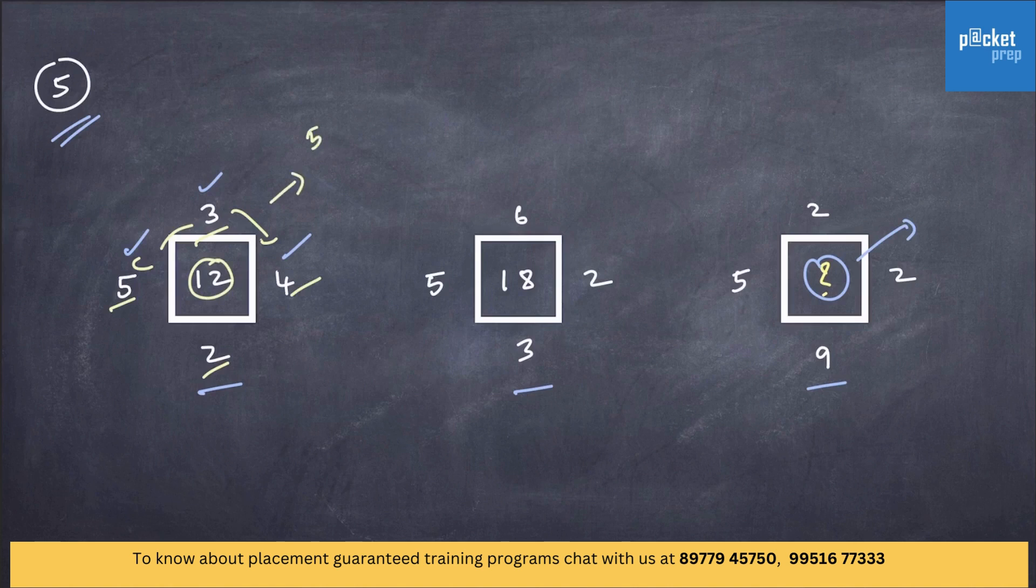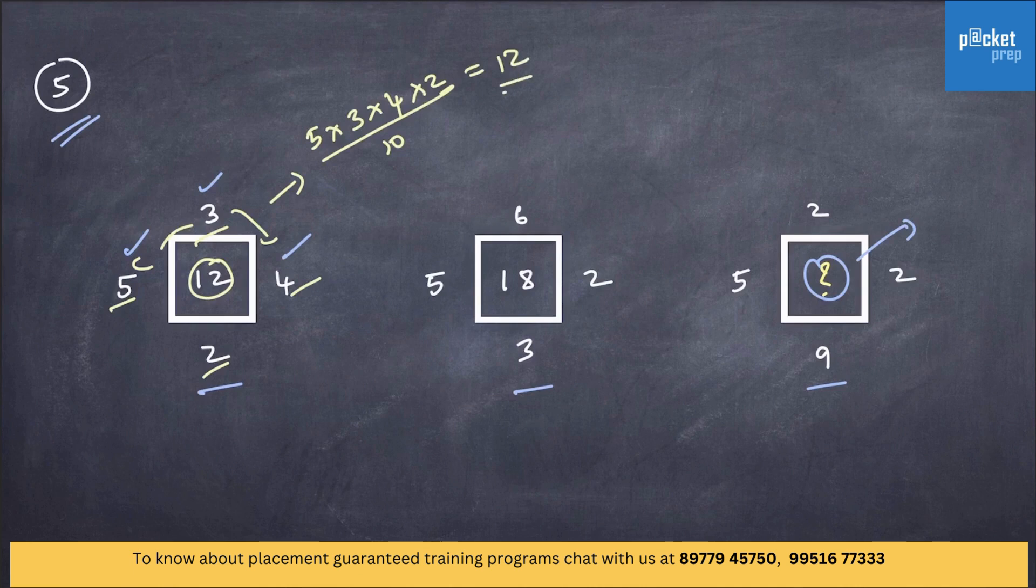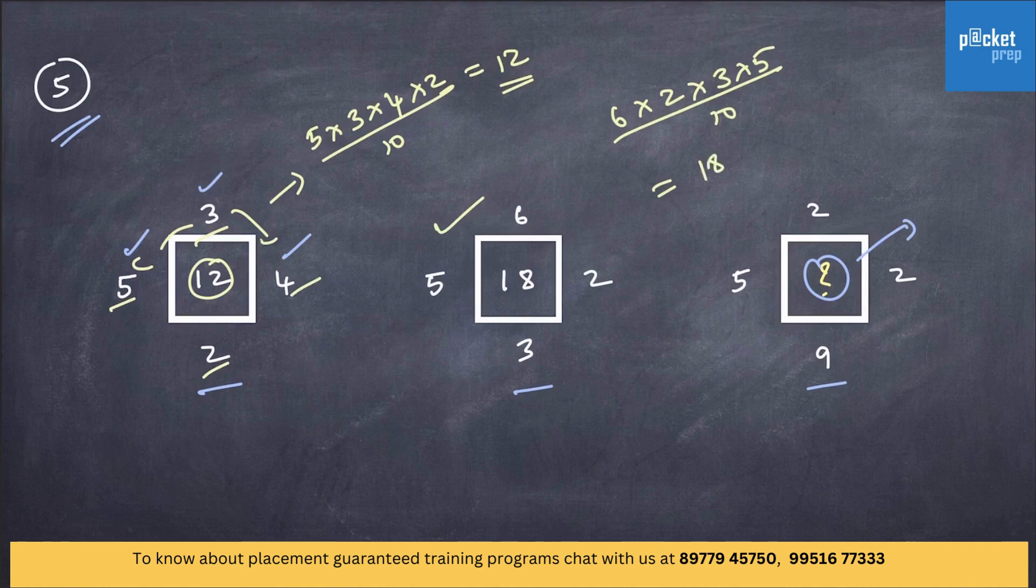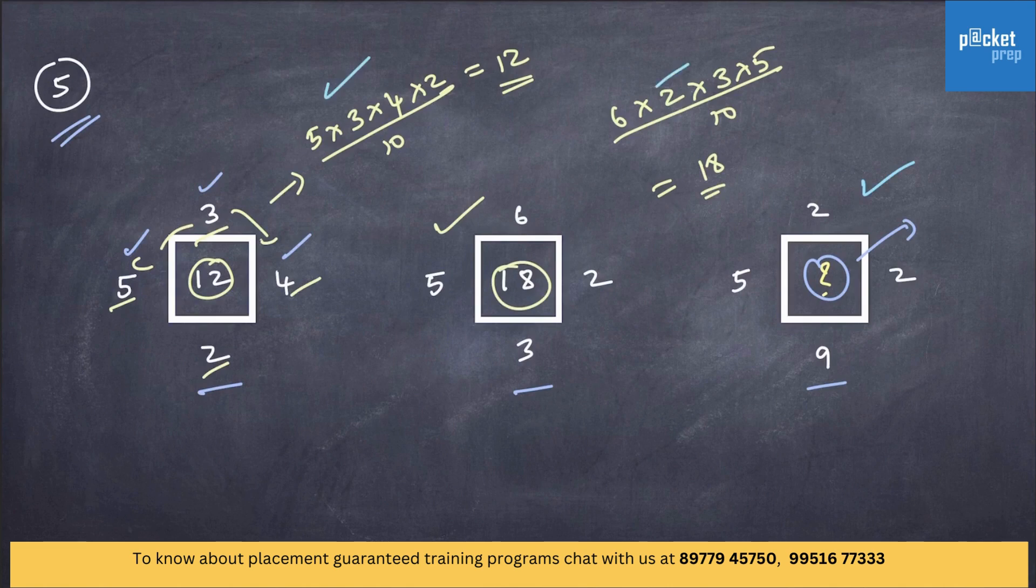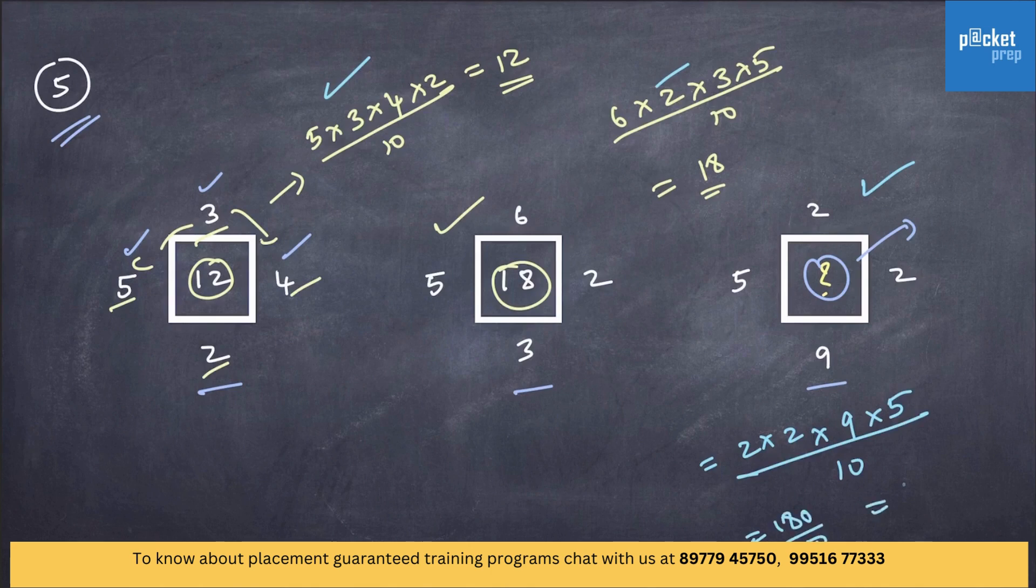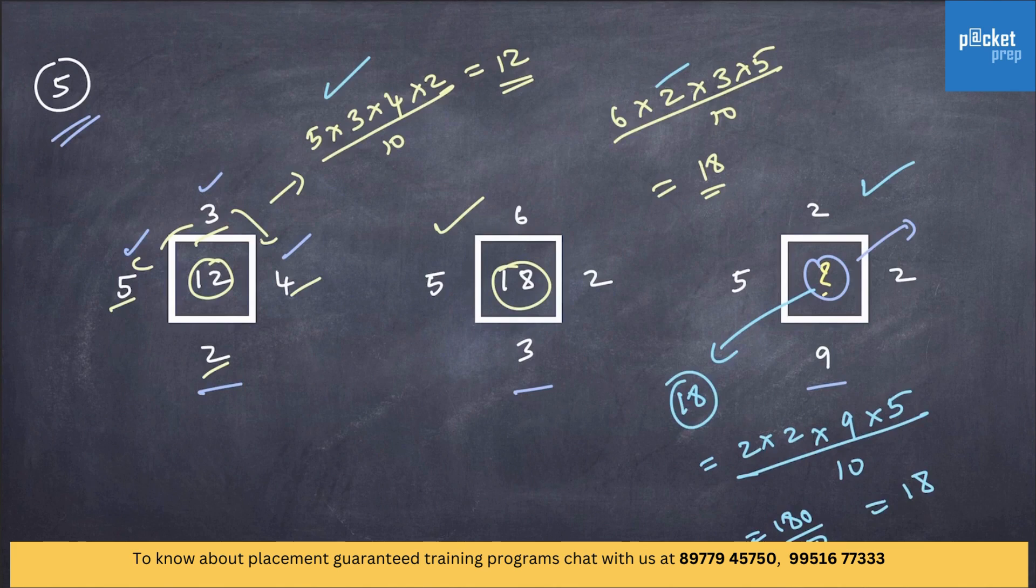In the first case, 5 into 3 into 4 into 2 by 10, which is equal to 12. Similarly, in the second square, 6 into 2 into 3 into 5 by 10, which will give us 18, which is the inside value. Now, what will be the missing term? Based on these two, it is pretty easy to find out. Therefore, it is 2 into 2 into 9 into 5 by 10. It is 180 by 10, which is equal to 18. So, the missing value is 18. So, in this question, the product of the numbers outside the square box divided by 10 will give us the missing value.